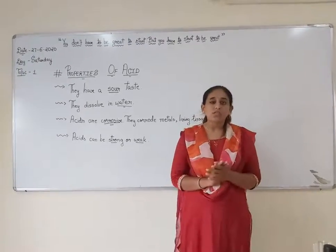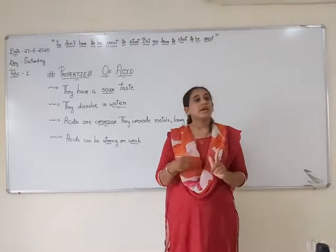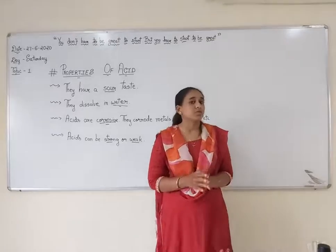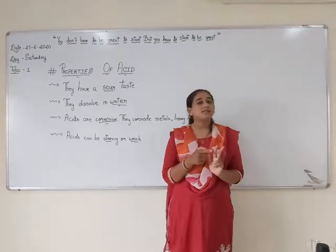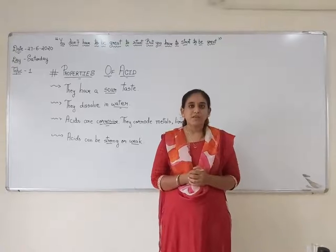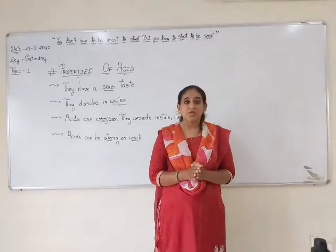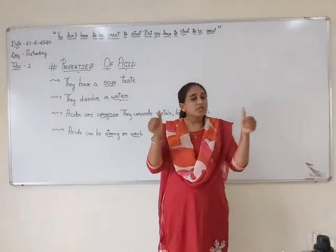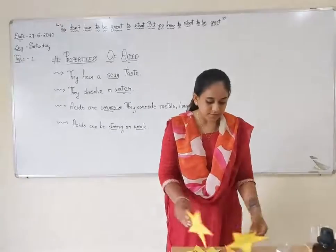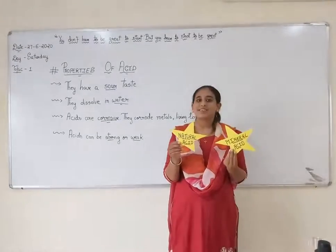Acids are present all around in a number of things. They are available in chemical laboratories, produced in plants, and also obtained from animals. A few examples are nitric acid, citric acid, tartaric acid, etc. There is also one acid present in the human body — the stomach contains hydrochloric acid, which helps in the digestion of food. Acids are classified into two types: the first is natural acid, and the second is mineral acid.